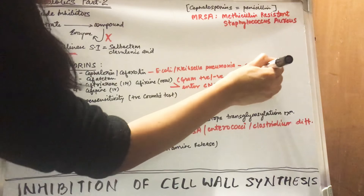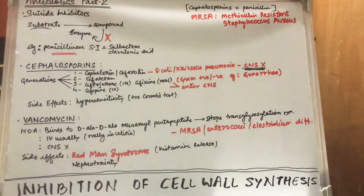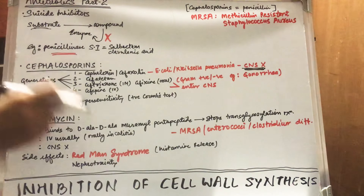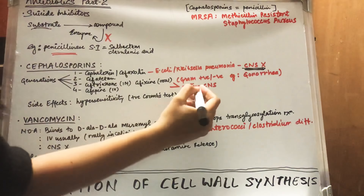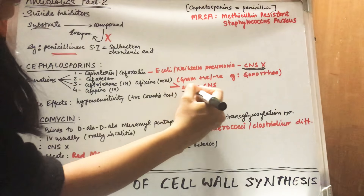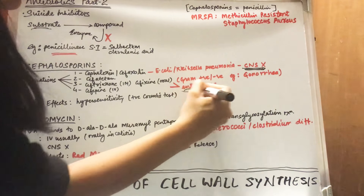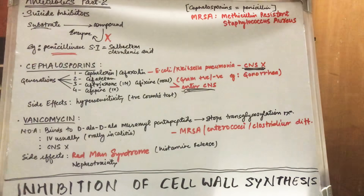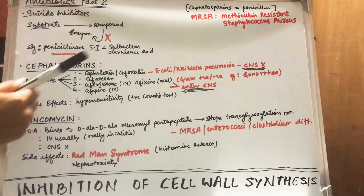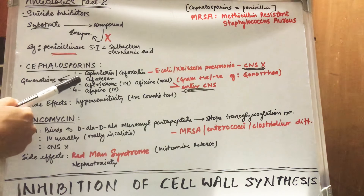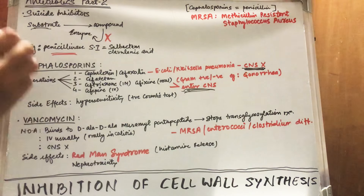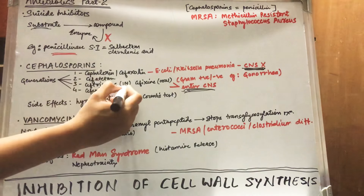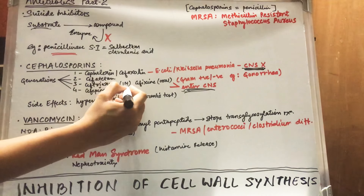You need to memorize this point — whereas third and fourth generation cephalosporins can enter the central nervous system. The second generation drug is cefotetan. The third generation includes ceftriaxone, which is given intramuscularly.